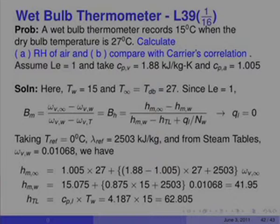Here T_w is 15°C and T_infinity equals T_dry-bulb equals 27°C. With Lewis number equal to 1, B_m — which is (omega_V_infinity minus omega_V_w) over (omega_V_w minus omega_T) — equals the Spalding number calculated from mixture enthalpies. Since the wet bulb records its temperature when heat conduction to it is zero, Q_L in our formula is set to zero.